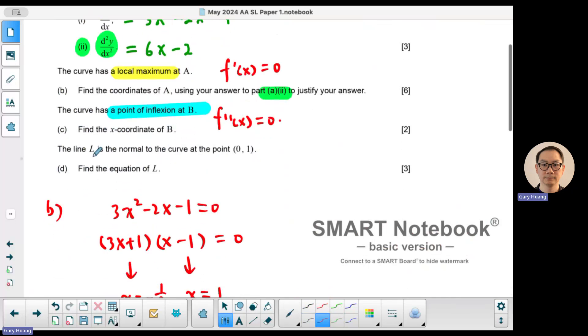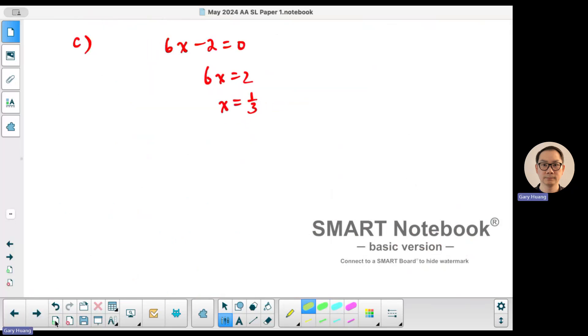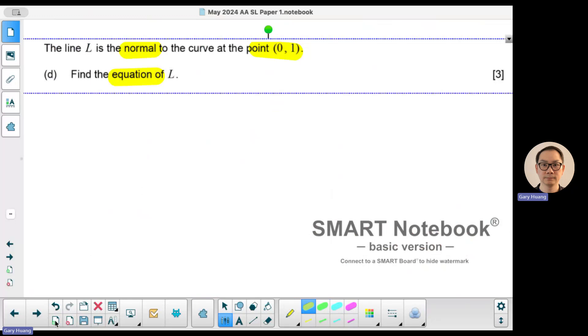Last part of the question. We have a normal, a normal equation of the normal at the point (0, 1). So what I'm looking for here is we're looking for an equation of a line. In the equation of a line, you need, first of all, the slope.